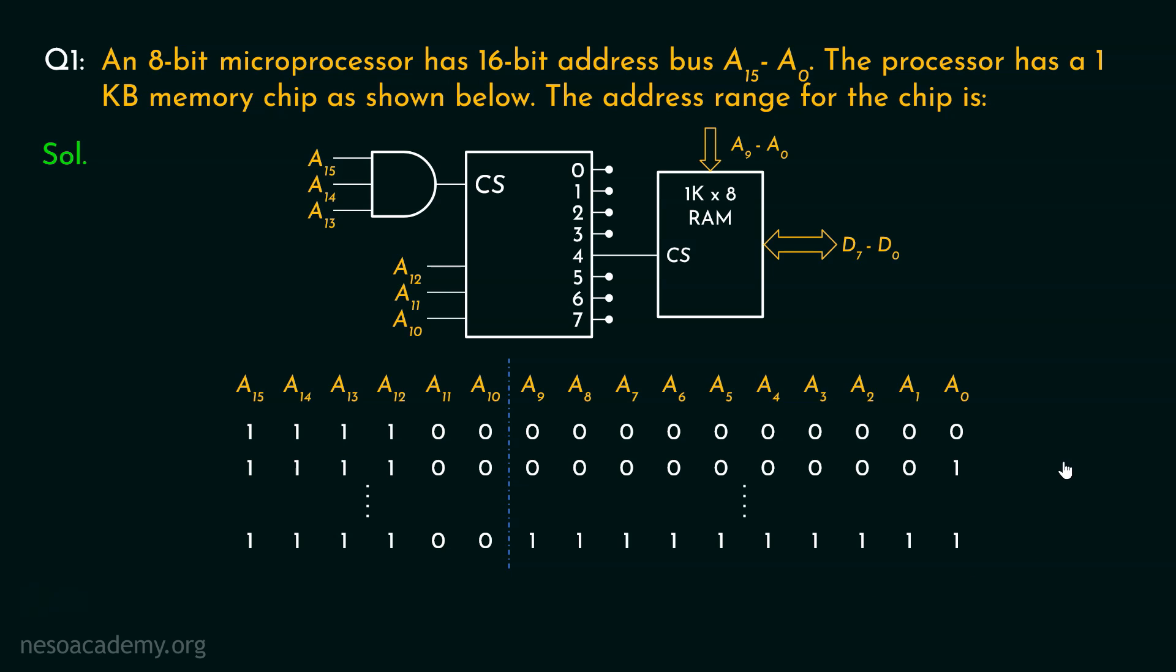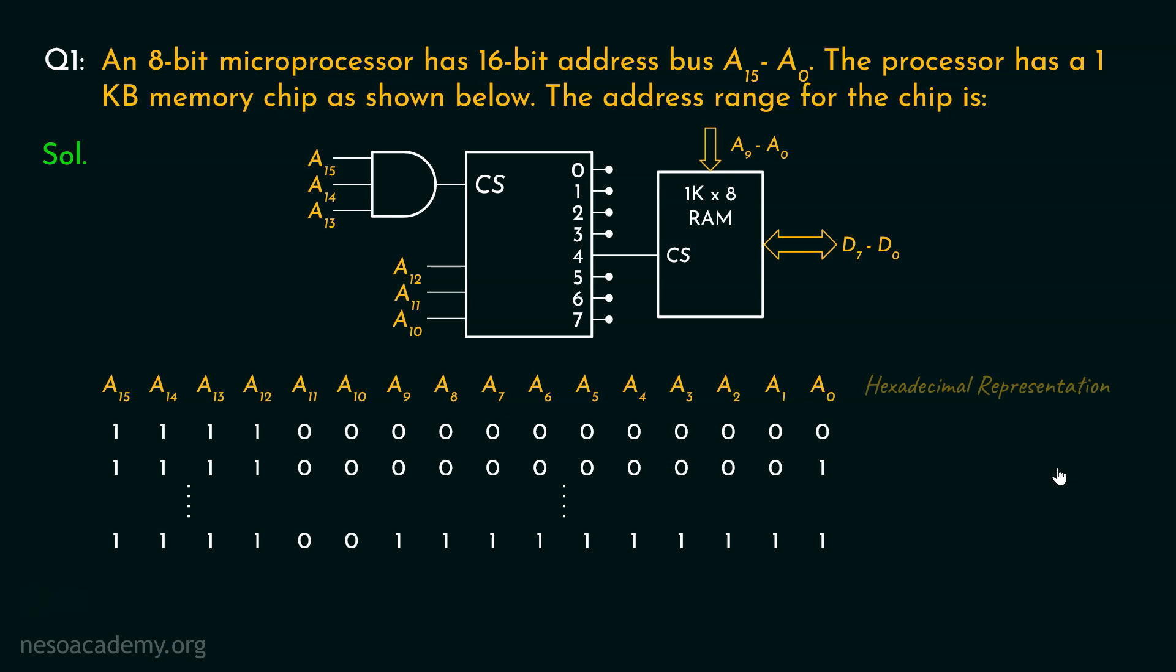Now if you remember, in the options, we were given hexadecimal representation of the addresses. So let's try to find out the hexadecimal representations as well. Now the conversion from binary to hexadecimal is actually easy. All we have to do is, group the bits from the least significant bit towards the most significant bit, 4 at a time.